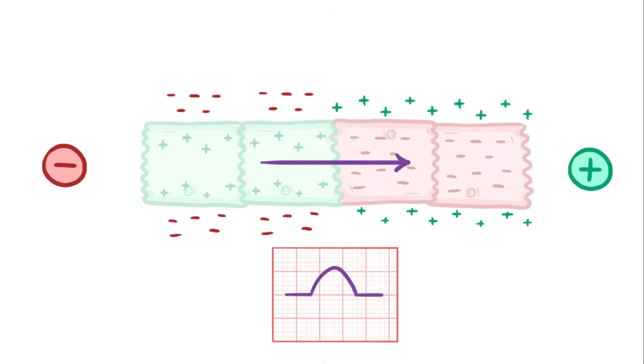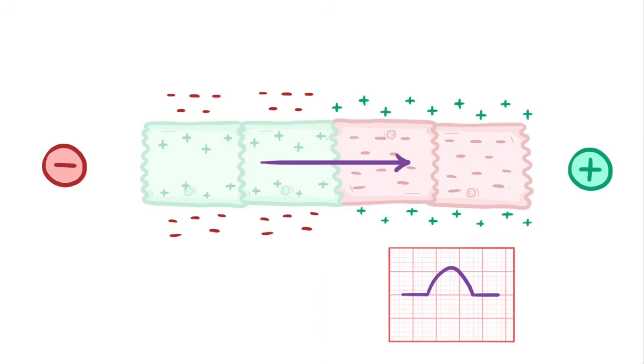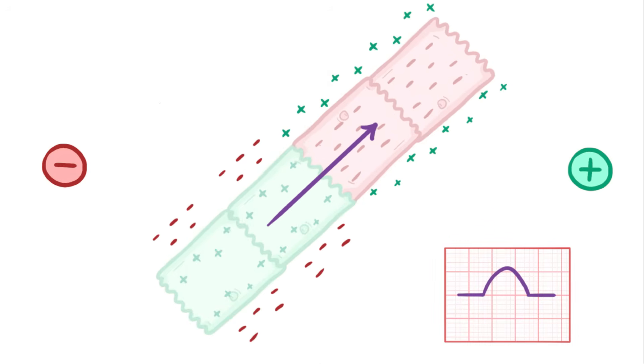Now even though it would be nice if the depolarization wave lined up perfectly with the electrodes, usually that's not the case. So what we end up looking at is the vector component that's parallel to the electrode. For example, let's say the depolarization happened this way, at an angle. Then we'd break the vector into two parts, one going parallel with the electrodes and one going perpendicular. The one we care about is the one that's going toward the positive electrode, which causes the deflection, though since this arrow is shorter, it's going to cause a slightly smaller deflection than previously.